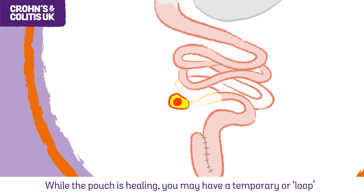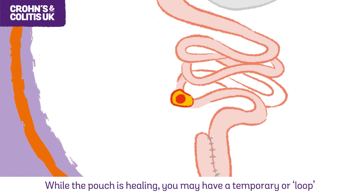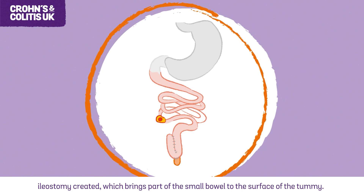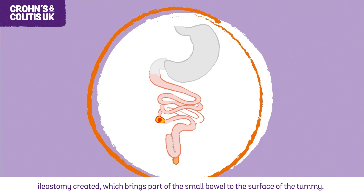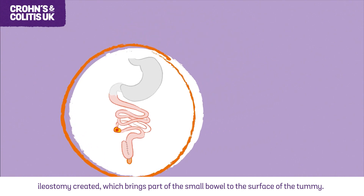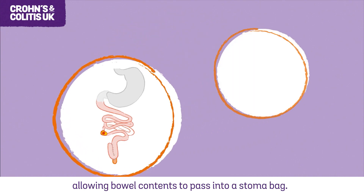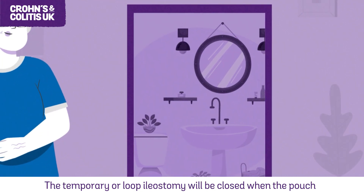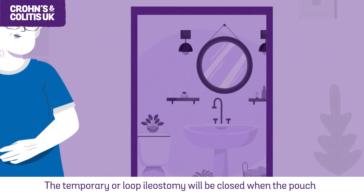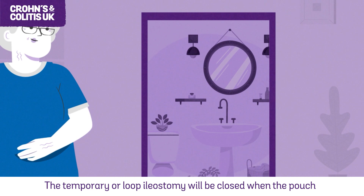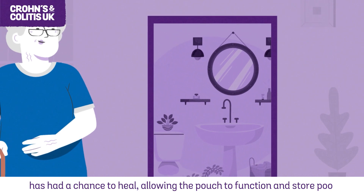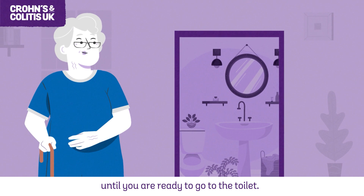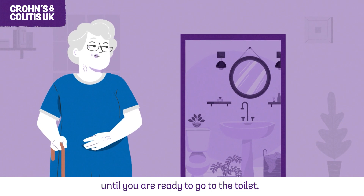While the pouch is healing, you may have a temporary or loop ileostomy created, which brings part of the small bowel to the surface of the tummy, allowing bowel contents to pass into a stoma bag. The temporary or loop ileostomy will be closed when the pouch has had a chance to heal, allowing the pouch to function and store poo until you are ready to go to the toilet.